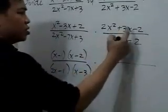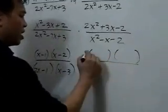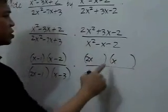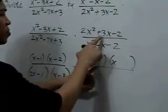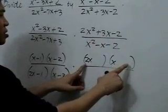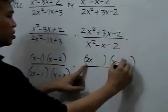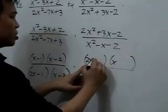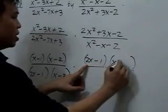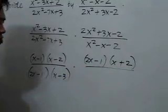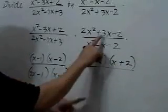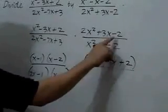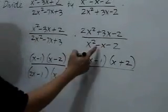For this numerator, again, we try 2x and x. We need a negative 2 and a positive 3 in the middle. So we'll have (2x-1) and then (x+2). You can check: 2x², the outer terms will give us 4x minus x is 3x, and negative 1 times 2 is negative 2.